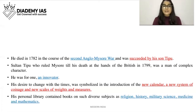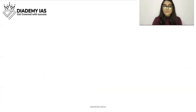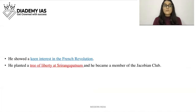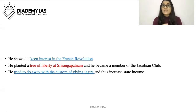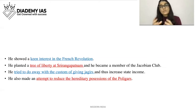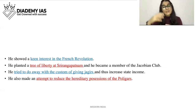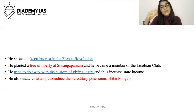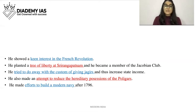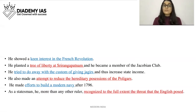He showed a keen interest in the French Revolution — a tree of liberty was planted at Srirangapatnam and he became a member of the Jacobin Club. He also made an attempt to reduce the hereditary possession of the poligars. After 1796, he made efforts to build a modern navy. As a statesman, he more than any other ruler recognized to the full extent the threat that the English posed.